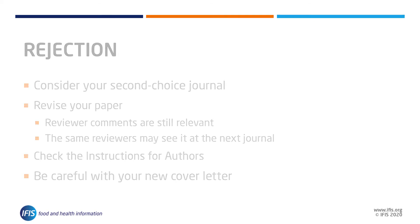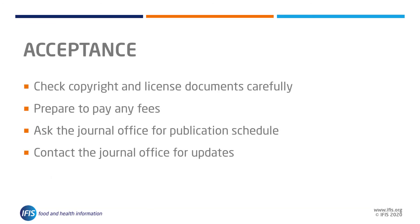Hopefully your paper will eventually be accepted. After acceptance, you will usually be required to sign copyright or licensing documents to give the publisher the rights to publish your article. Be sure to read these documents thoroughly to understand what you are signing. If you would like to publish your article as open access, article processing charges are usually requested at this stage, along with options for a Creative Commons license.